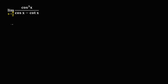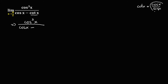First we need to rewrite this equation. We have cosine to the power 3x over cosine x minus cotangent x. Since cotangent x is equal to cosine x over sine x, we're going to use this identity for cotangent x, replacing it with cosine x over sine x.